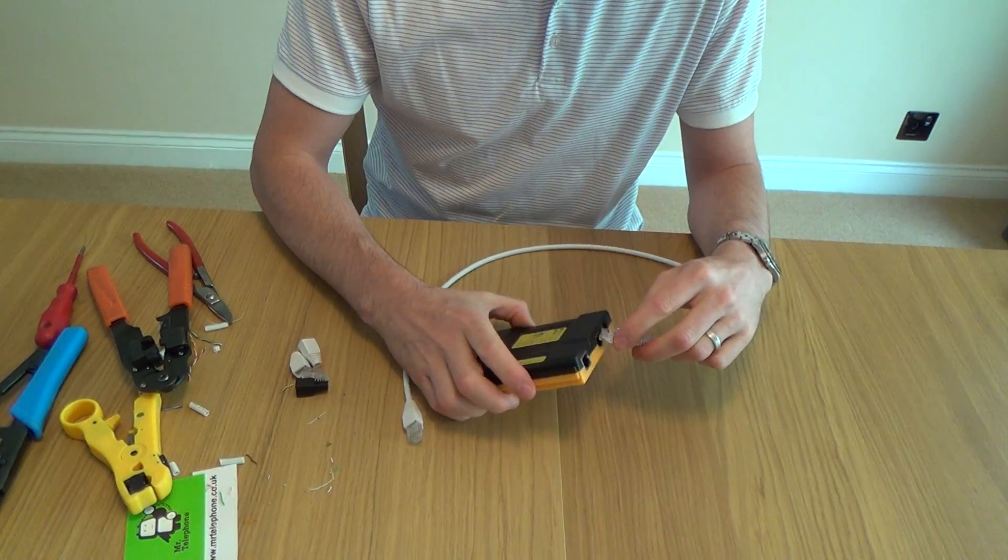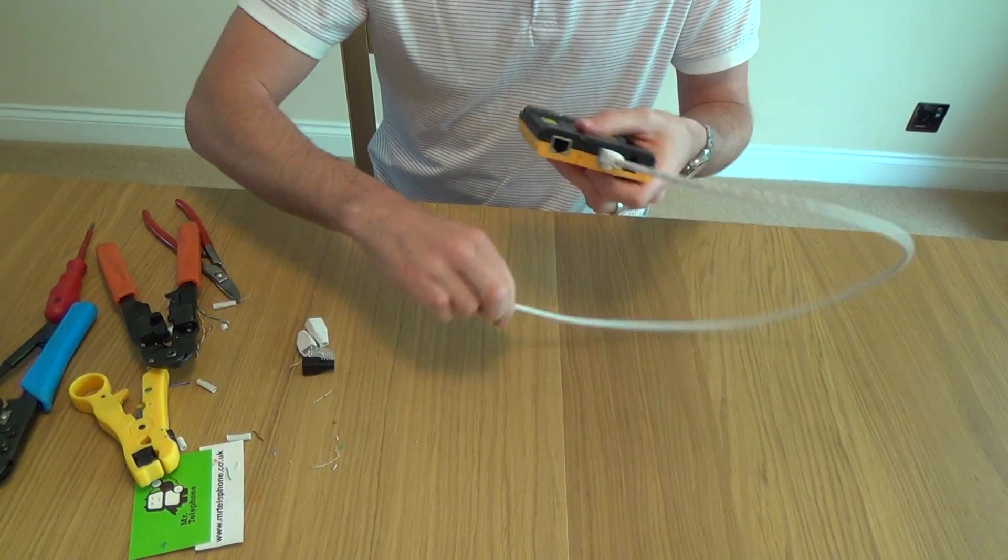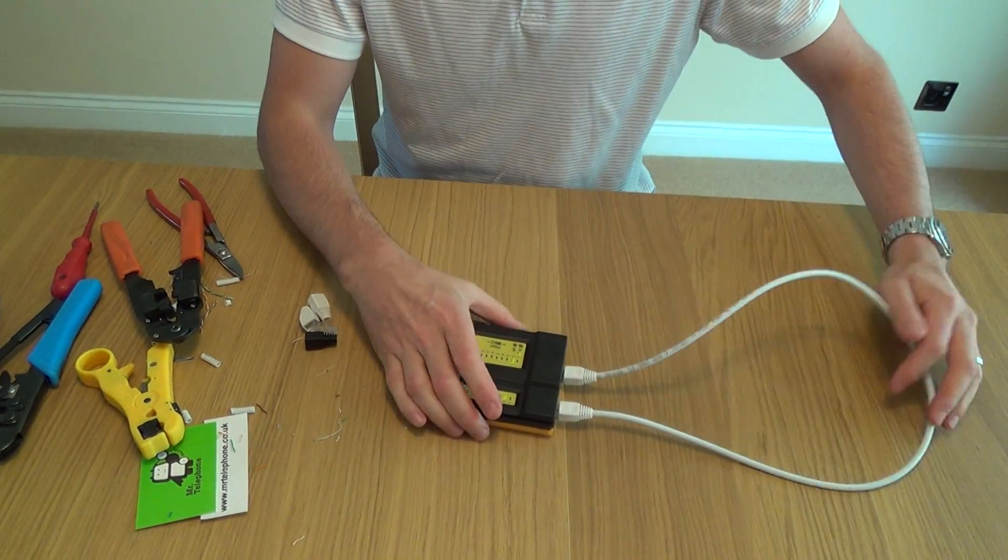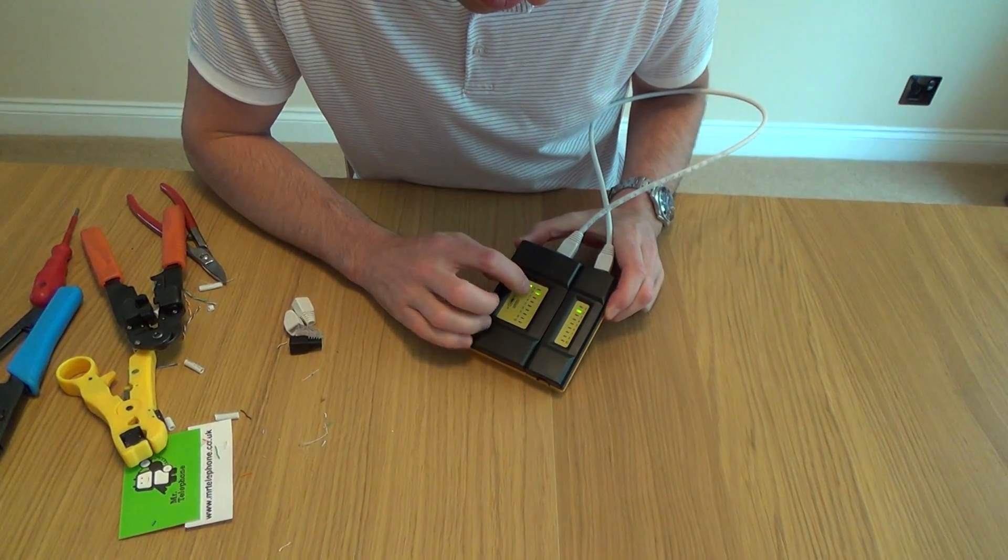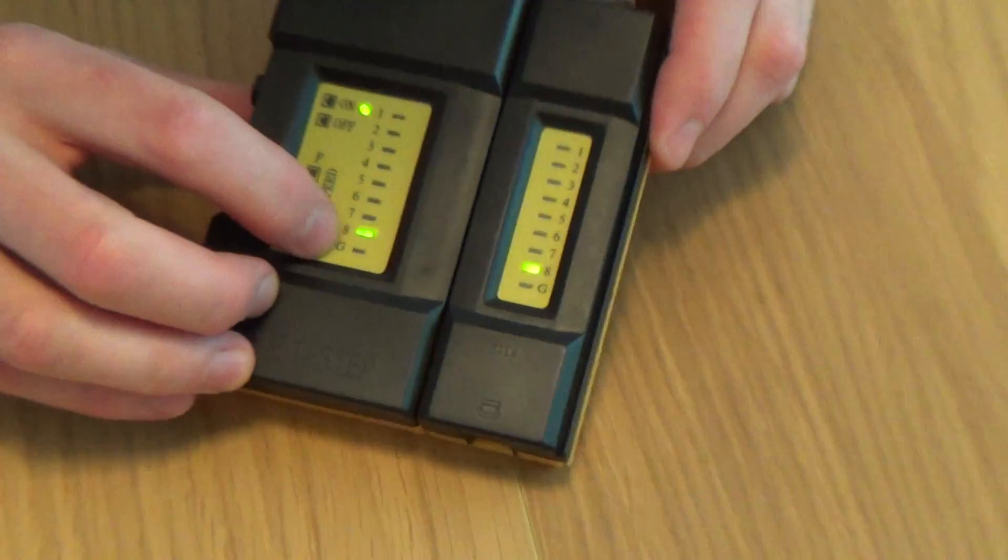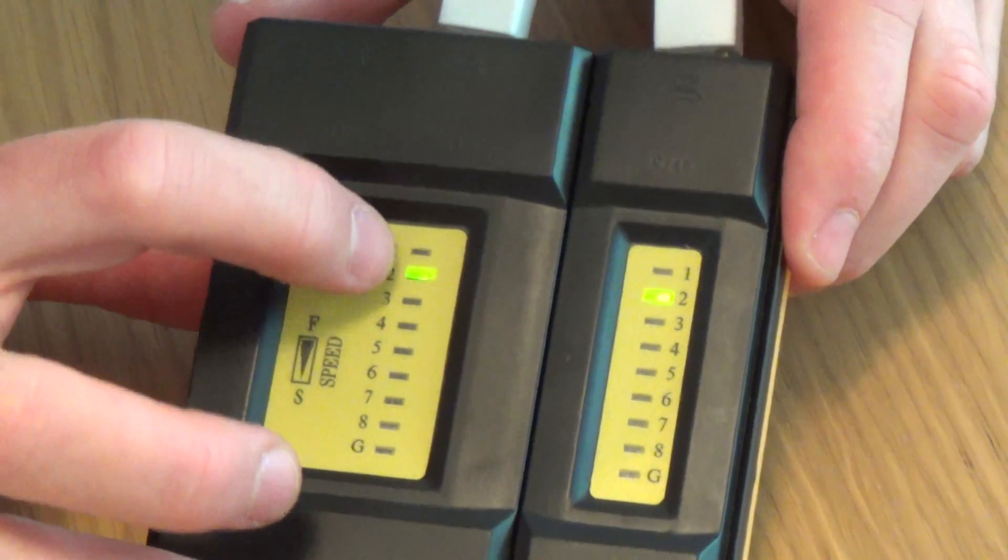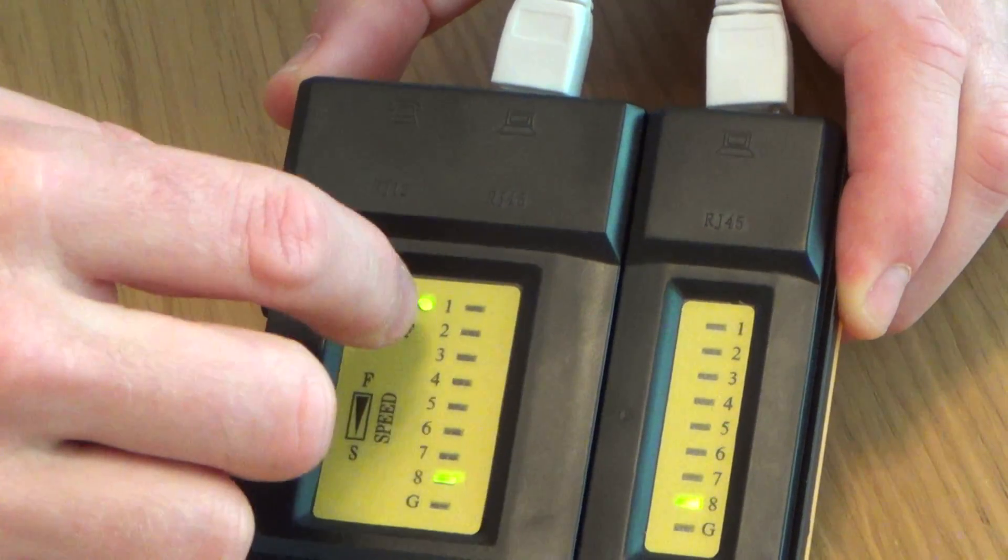And if you want to test it, you can pick up these testers for a few pounds on eBay. And plug it in there. And I've done a straight through cable. So we want to see the wires go all the way down there. So one, two, three, four, five, six, seven, eight. So that means that there's continuity between all the pins.